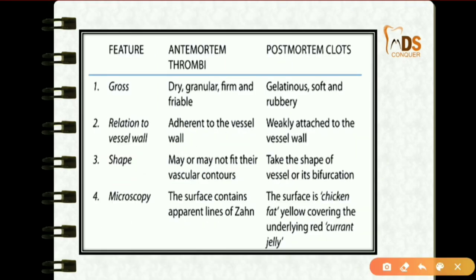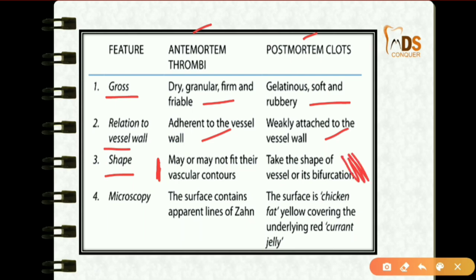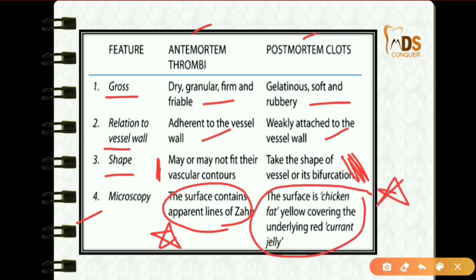The difference between antemortem thrombi and postmortem clots: antemortem thrombi are dry and granular, while postmortem clots are gelatinous and soft. Antemortem thrombi are adherent to the vessel wall; postmortem clots are weakly attached. Antemortem thrombi may or may not fit vascular contours; postmortem clots take the shape of the vessel. Microscopically, postmortem clots show a chicken fat yellow surface covering underlying red currant jelly — these two descriptors are very important to remember.